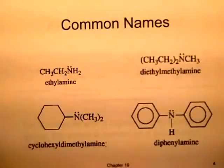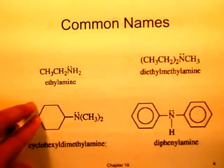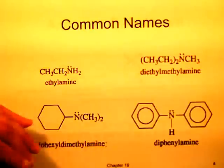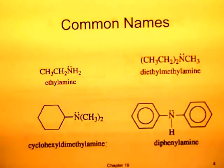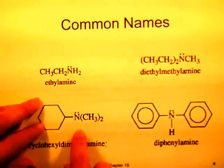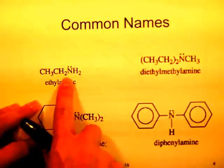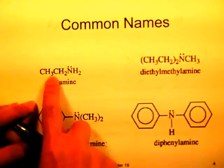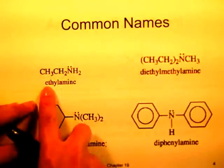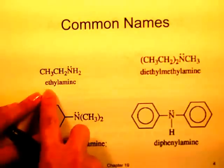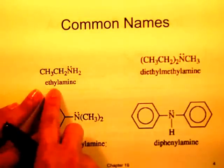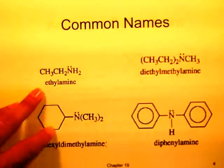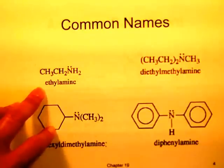First we need to learn how to name amines. When you use the common naming system, you take the longest chain of carbons and identify the most important functional group in the molecule. For this molecule, the most important functional group is the amine, and it's a primary amine with two carbons attached to it in the form of an ethyl group. So the common name is ethylamine — you state the alkyl groups the nitrogen has attached to it and then add 'amine' at the very end.